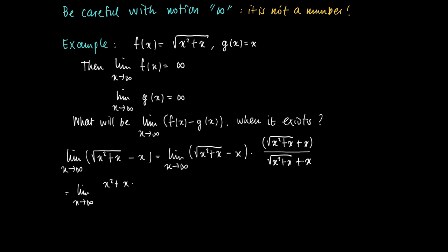But by doing so we can multiply the numerator with the square root of x squared plus x minus x, and we obtain x squared plus x minus x squared. As a denominator we get the square root of x squared plus x plus x. Now the numerator simplifies to x, and we will divide the numerator and denominator by x.